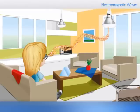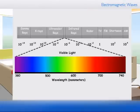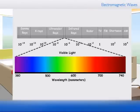Light wave, on the other hand, is the electromagnetic radiation of a wavelength that is visible to the human eye. It lies within a range of about 380 or 400 nanometers to around 740 nanometers, which lies between the invisible infrared region with longer wavelengths and the invisible ultraviolet with shorter wavelengths.